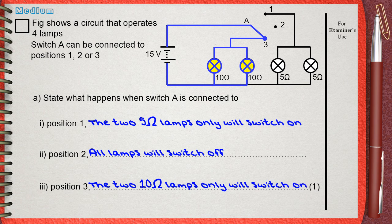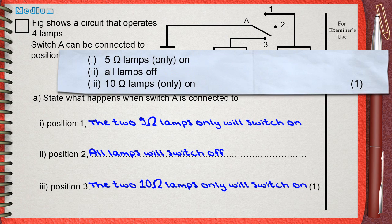Sadly, the mark scheme awards only one mark for the three questions. This means that if any one of the three questions is wrong, you will lose the single mark even if the other two are correct.